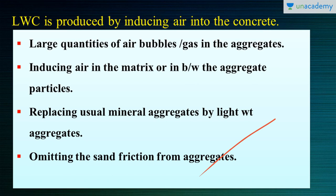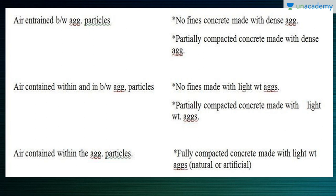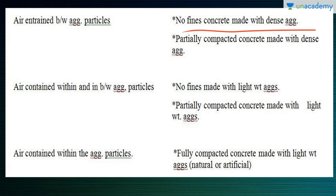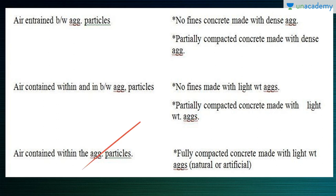Since normal weight coarse aggregate is used with almost all fine aggregates omitted, such concrete is known as no-fines concrete. To summarize the manufacturing methods: first, air entrained between aggregate particles — done by no-fines concrete with dense aggregates or partially compacted concrete with dense aggregates. Second, air contained within and between aggregate particles — by no-fines or partially compacted concrete with lightweight aggregates. Third, air contained within the aggregate particles — by fully compacted concrete with lightweight aggregates, which may be natural or artificial.